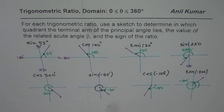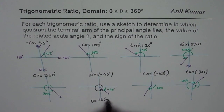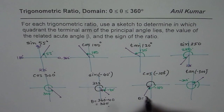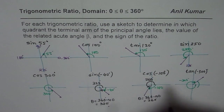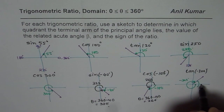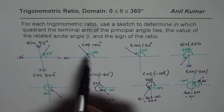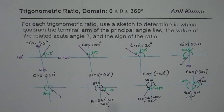We have to find the principal angles for the negative angle cases. For minus 40 degrees, the principal angle theta equals 360 minus 40, which is 320 degrees. For minus 100 degrees, it is theta equals 360 minus 100, which is 260 degrees. For minus 300 degrees, the principal angle is 360 minus 300, which equals 60 degrees. All the positive angles listed are already principal angles, so I am not rewriting them.